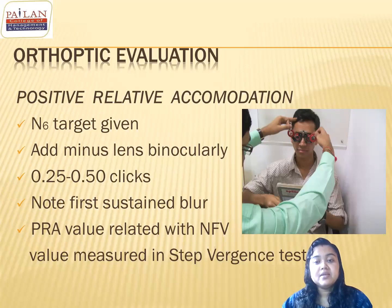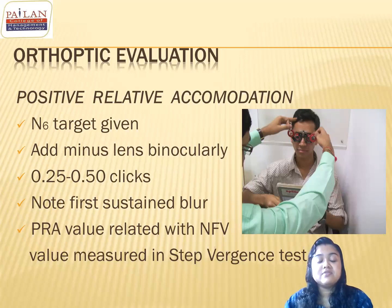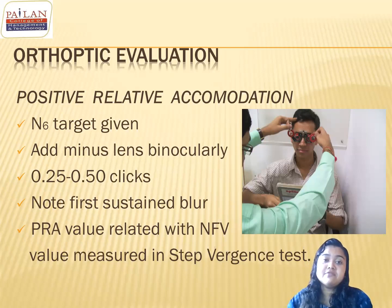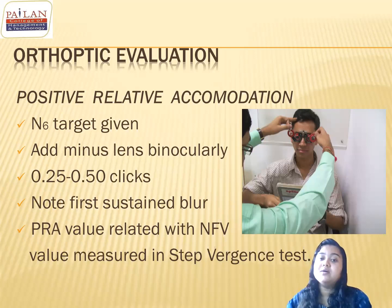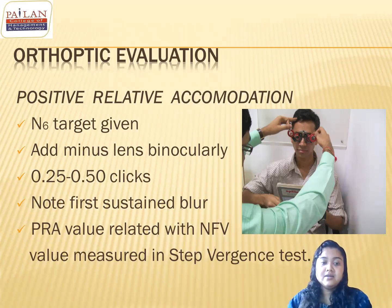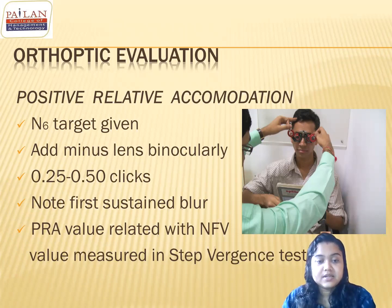If the NFP value is higher, that may be the reason the PRA value is also higher. If PRA is less, the patient might have accommodative insufficiency and cannot stimulate accommodation to the normal extent. If NRA value is less, that means the patient cannot relax the accommodation to a proper extent.